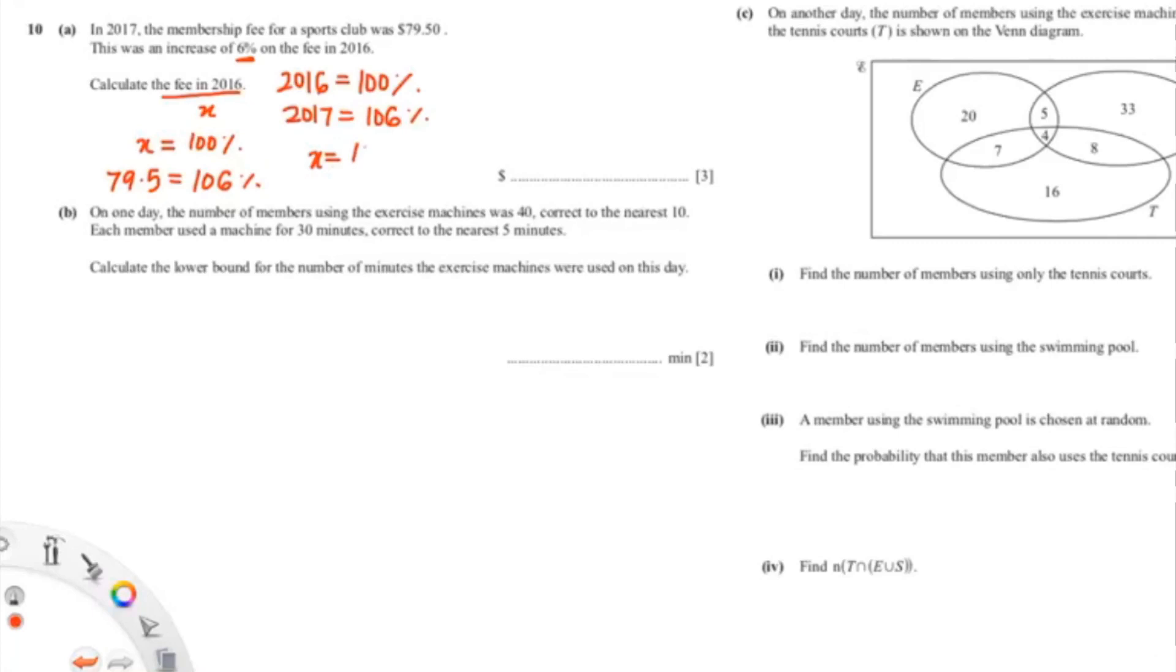Wait, sorry. So it's 100% times 79.5 over 106%. Now we can change the percentage into decimal, so there will be 1 times 79.5 over 1.06.